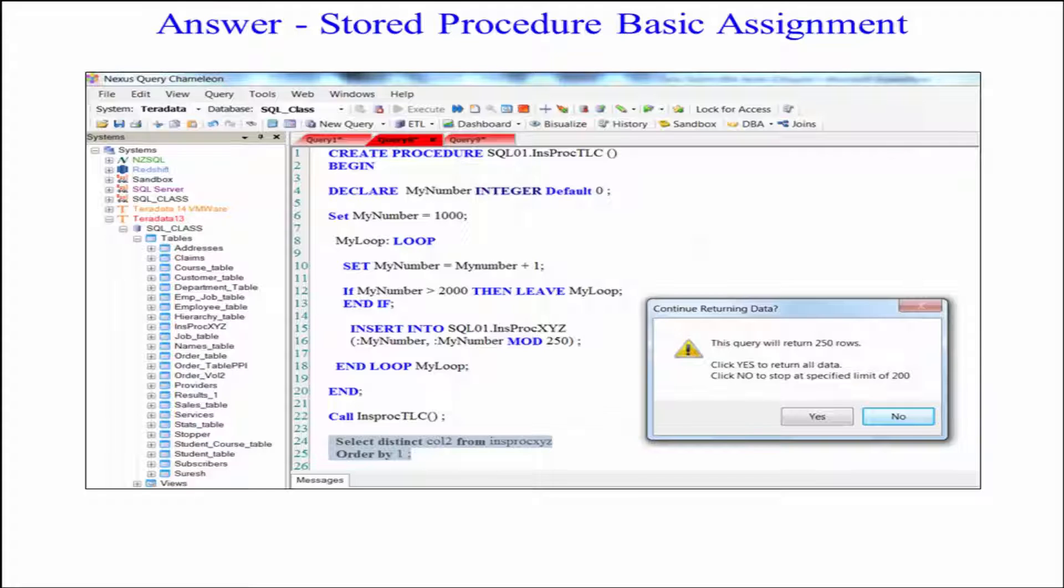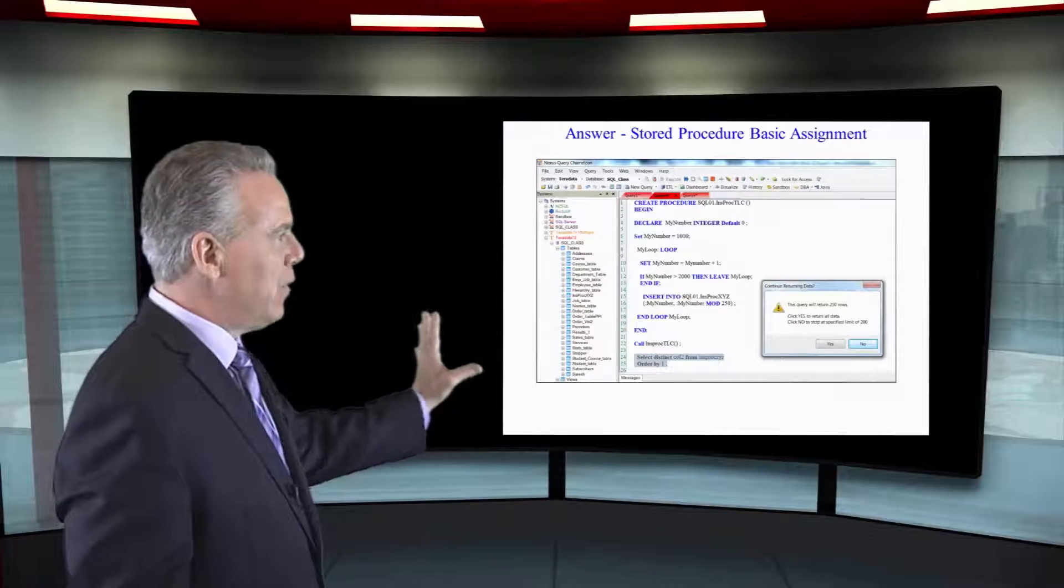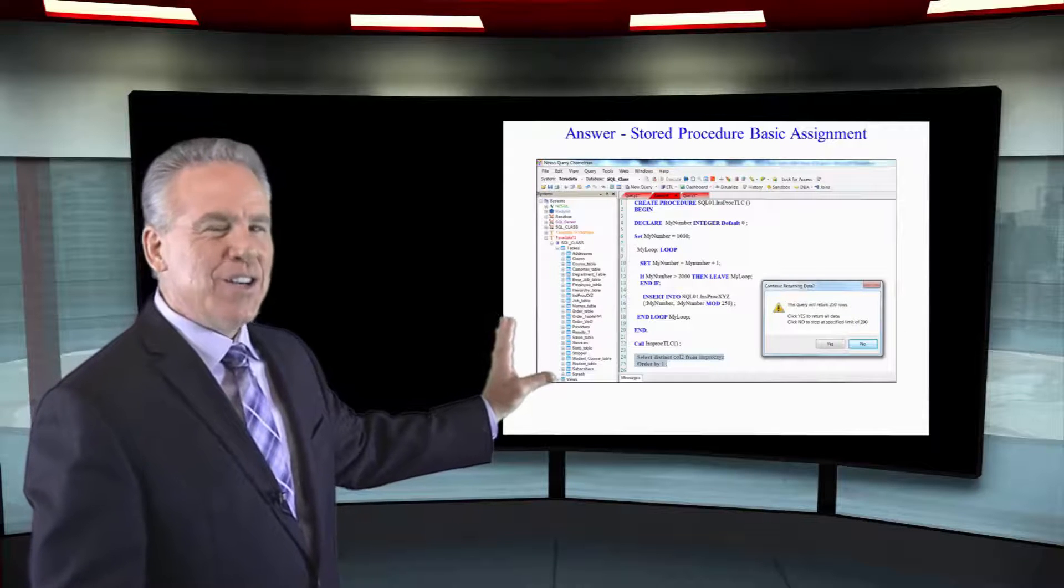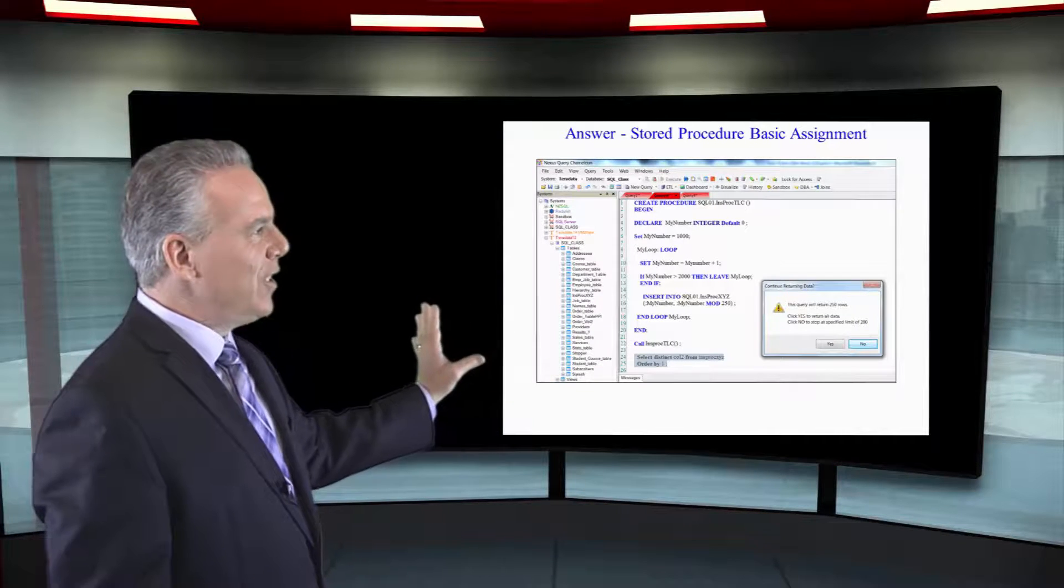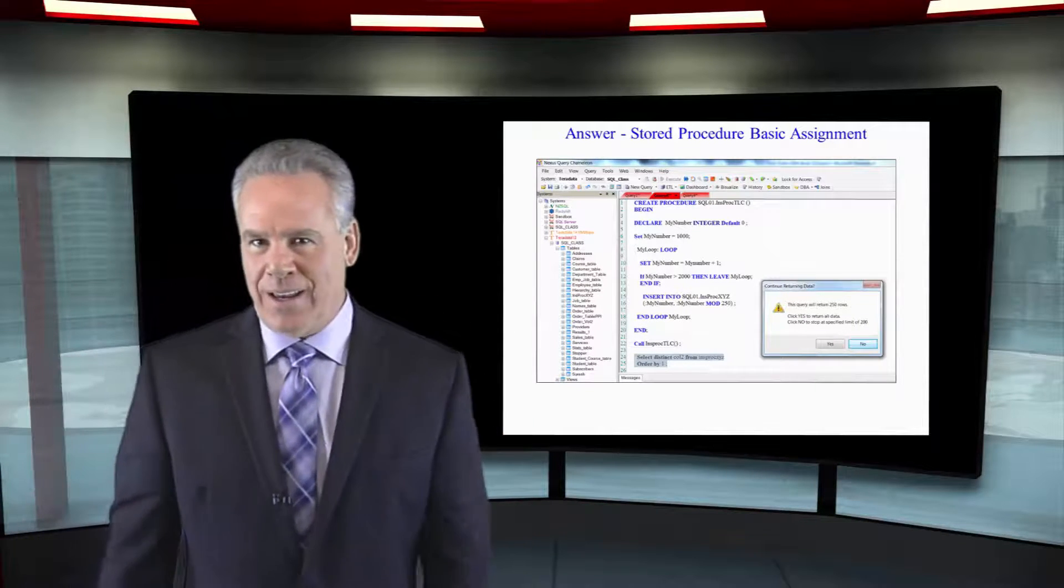Now, I create the procedure. I call it INSPROC TLC. My initials, Thomas Lee Coffing. And you can see my BEGIN. Of course, I have an IN statement. Now, I'm declaring a variable called MYNUMBER and I'm setting it to zero. But then, I want you to notice that right away, I say, I'm going to set MYNUMBER equal 1,000. You really didn't need to do this. I just happened to do it this way.